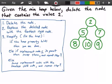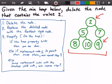Hello guys and welcome to this video on binary min or minimum heaps. Here we're given a min heap in green to the right, and we want to delete the node that contains the value 2. To the left in blue we have the algorithm that we're going to use to delete this node. We need to first delete the node that contains the value 2, and then replace the deleted node with the furthest right node — that's the node furthest down and to the right — which contains the value 9.